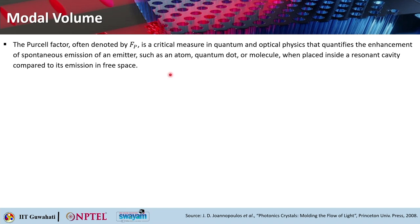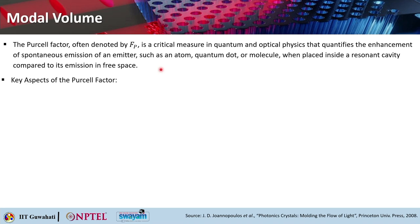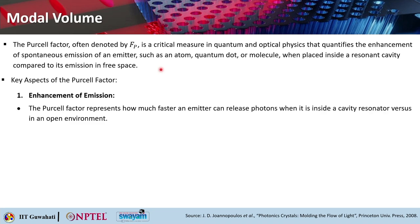The Purcell factor, denoted Fp, is a critical measure in quantum and optical physics that quantifies the enhancement of spontaneous emission of an emitter — such as an atom, quantum dot, or molecule — when placed inside a resonant cavity compared to its emission in free space.